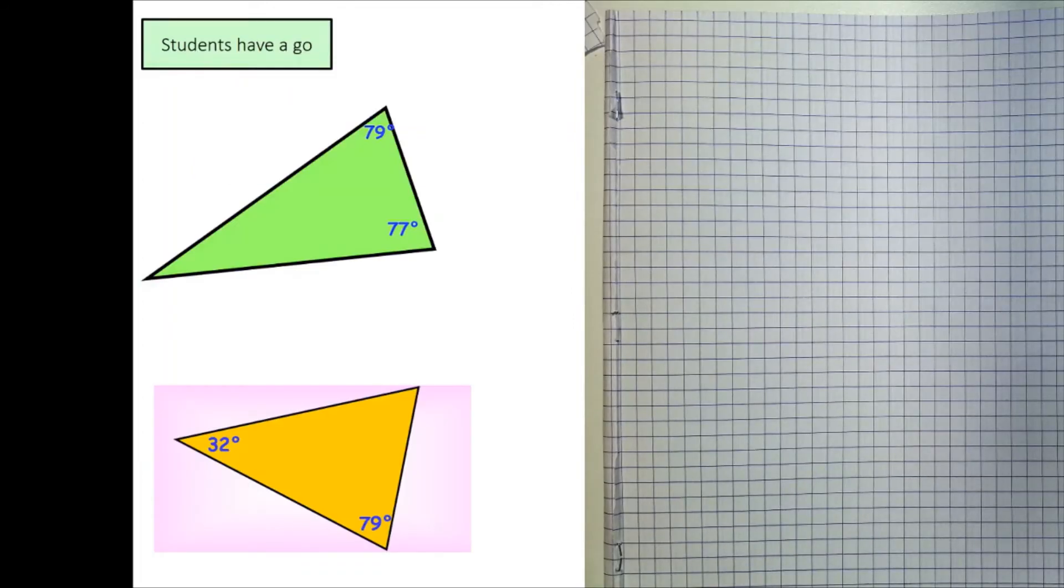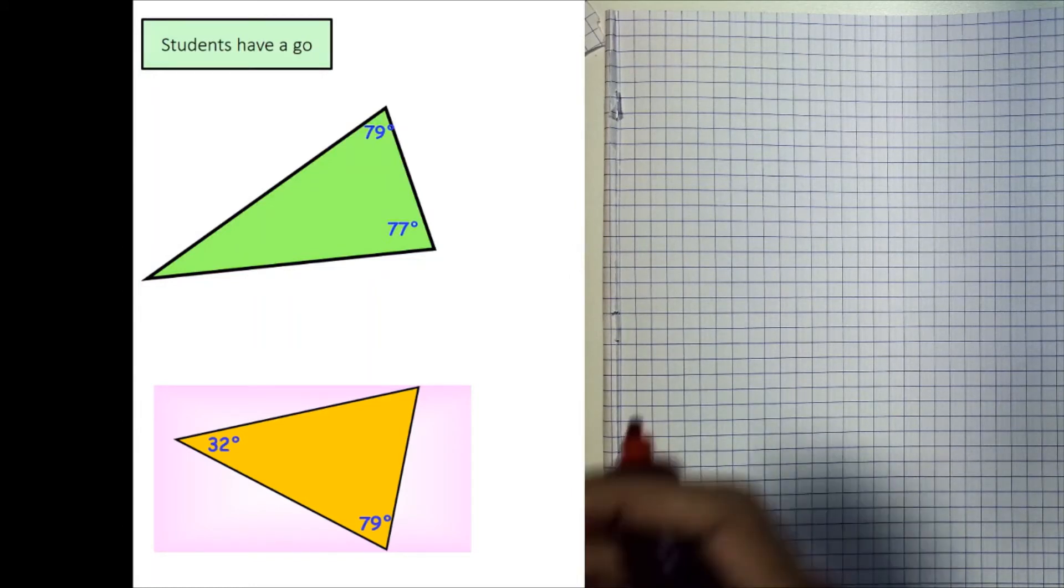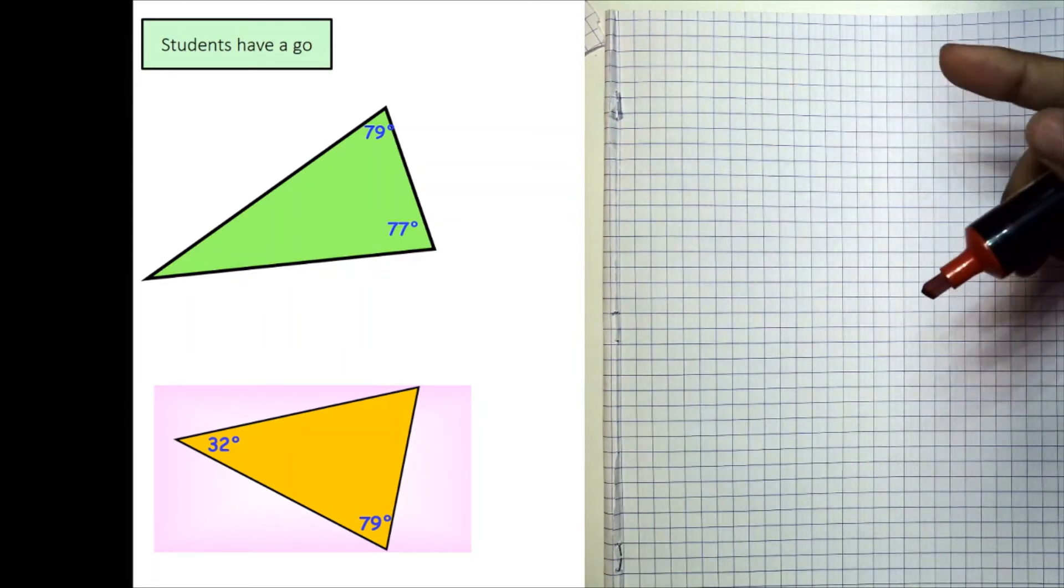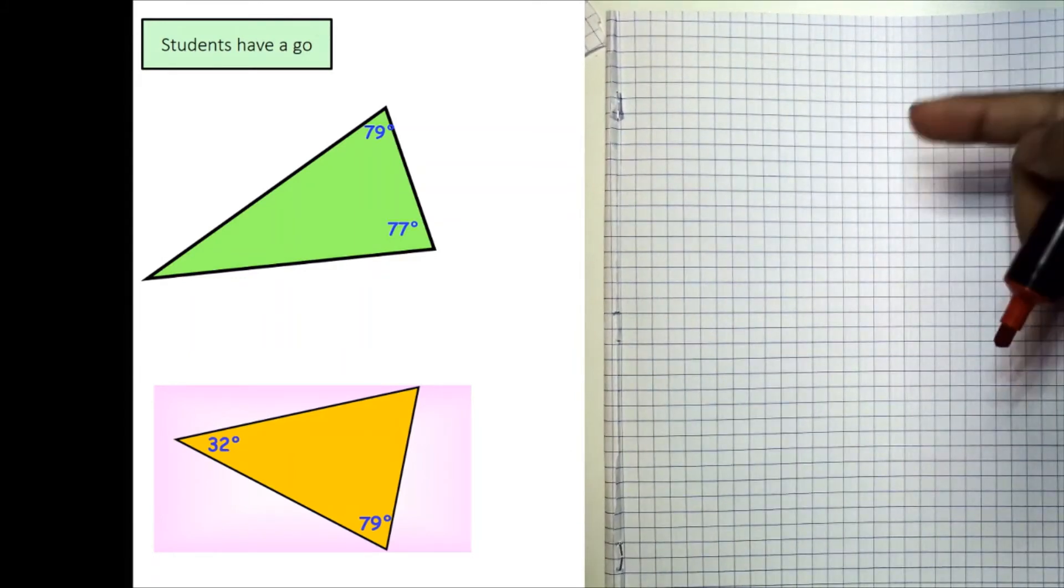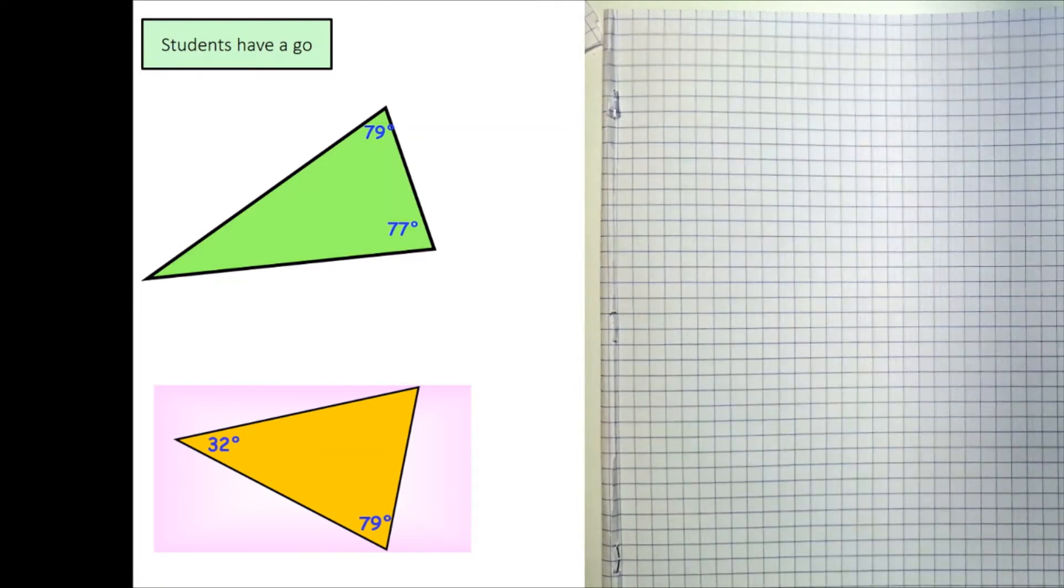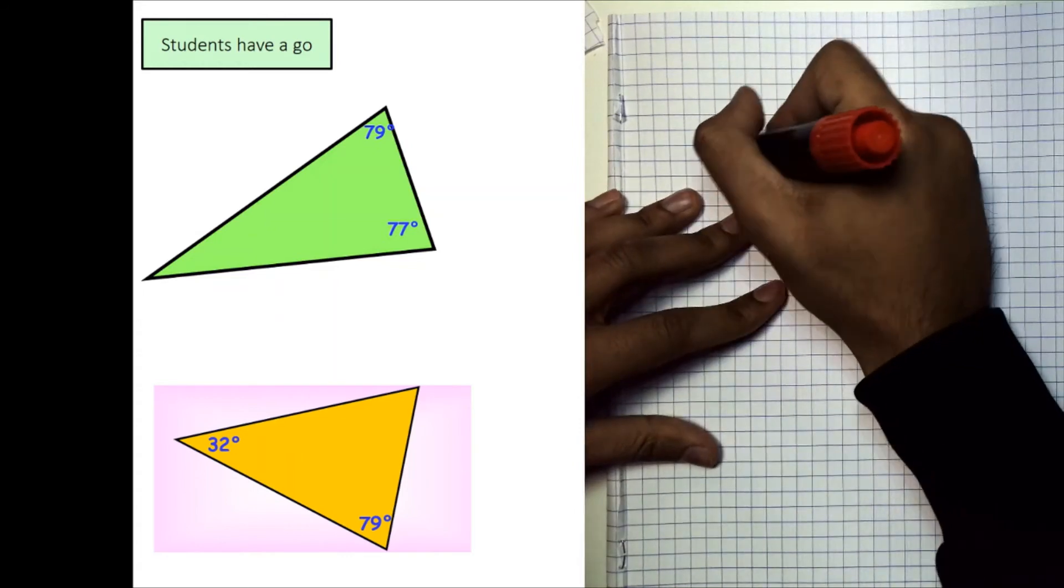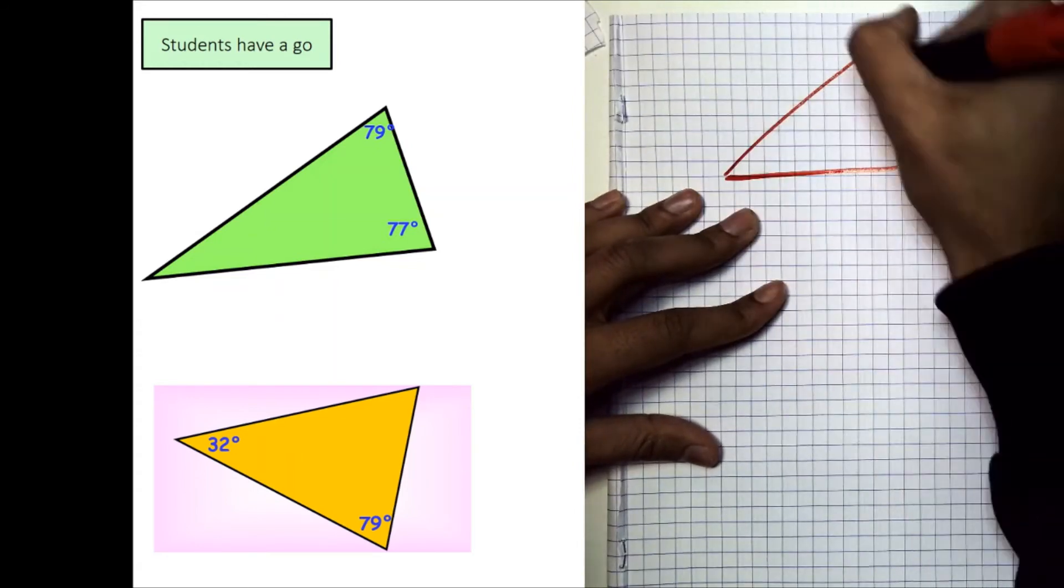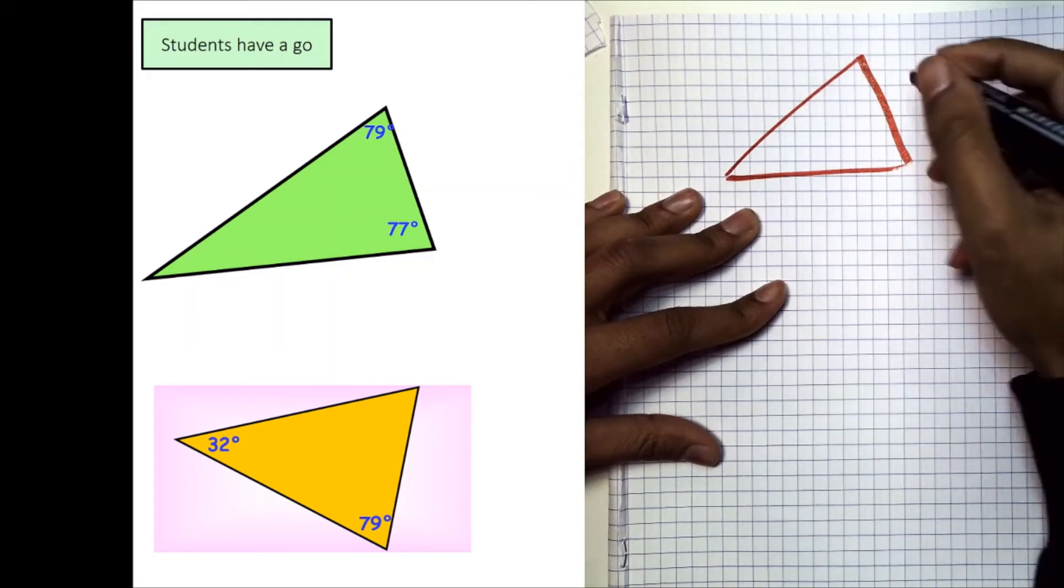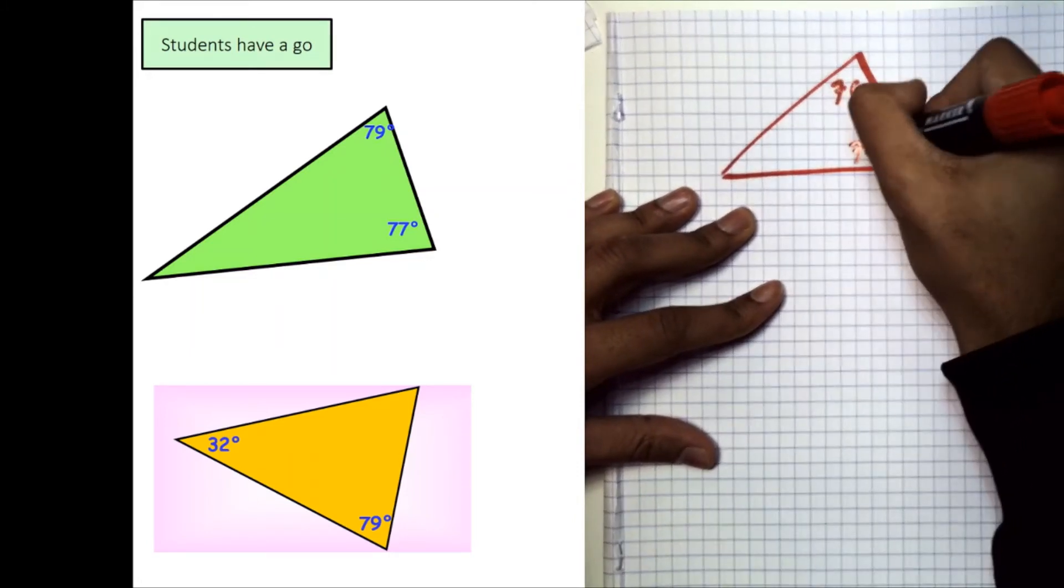Now, I want you to have a go at these examples. I've gone through two, using the same method, I want you to get these two. Now, all you're doing is finding the angle that doesn't actually have a size on it. So, you have 39, 77 degrees, you don't know the third angle, and that's what I want you to work out. And it's the same for the yellow triangle. So, have a go, pause the video, of course, and once you're ready, I'll be going through it.